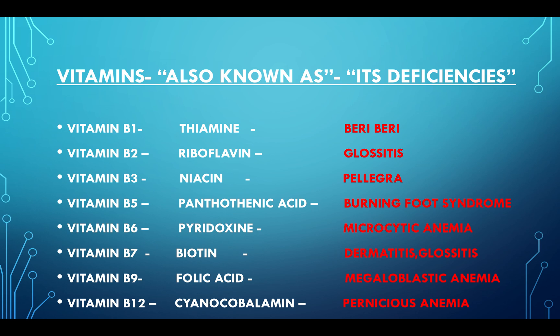Vitamins and their deficiency diseases: Vitamin B1 (Thiamine) — deficiency produces Beriberi. Vitamin B2 (Riboflavin) — deficiency produces Glossitis. Vitamin B3 (Niacin) — deficiency produces Pellagra.